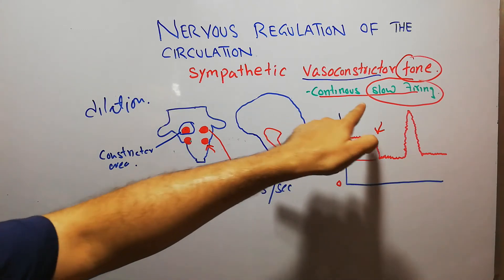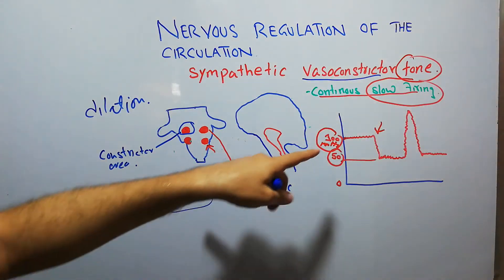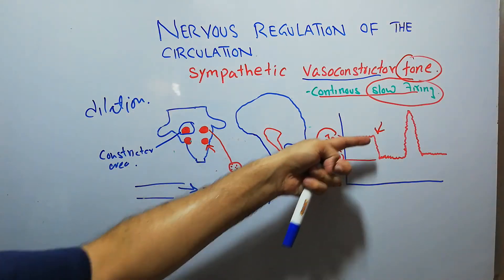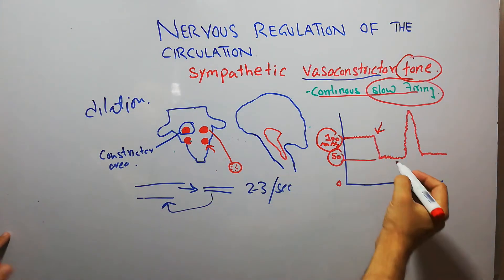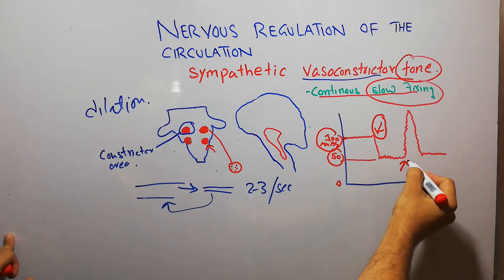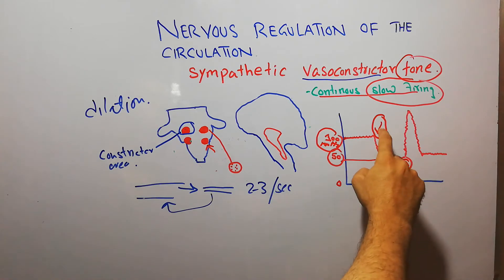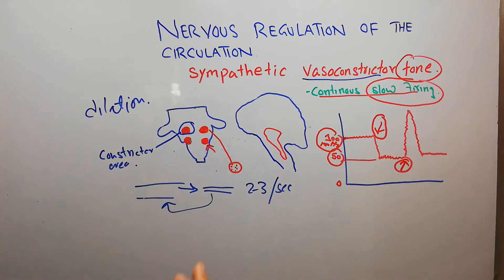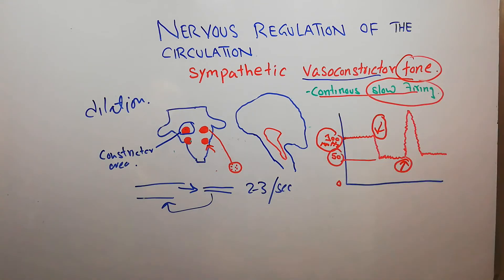This explains that if there were no continuous sympathetic vasoconstrictor tone, the mean arterial pressure could not be maintained normally. After some time, we inject norepinephrine — the neurotransmitter normally released from sympathetic nerve endings — to counteract the anesthetic. As we inject norepinephrine, the tone comes back and helps to restore the mean arterial pressure for some time.